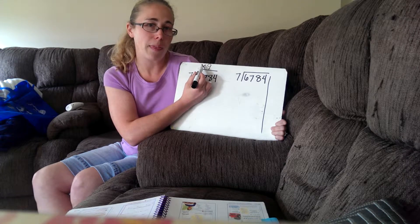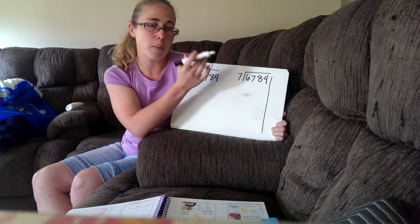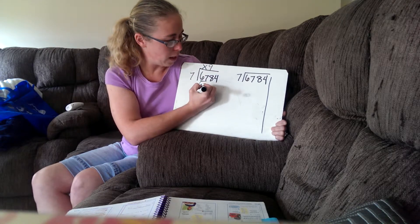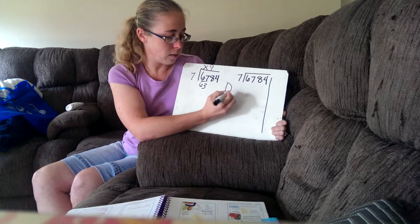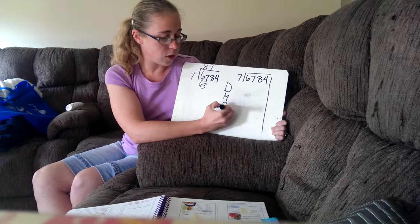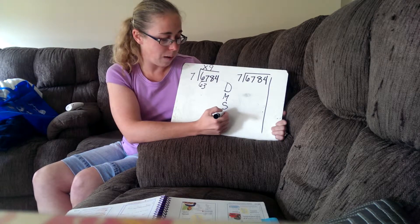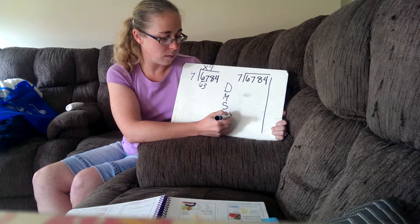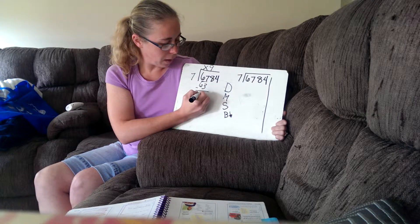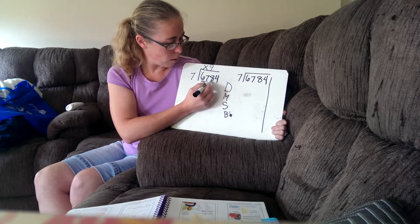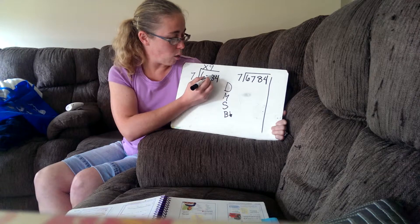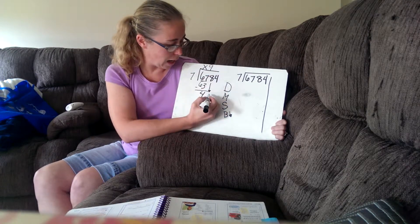That's why we put the x or the zero right there to hold that place so that we didn't try to put the digit there. Nine times seven equals 63. Now, remember — Dad, we just divided; Mom, now we just multiplied; Sister, it's time to subtract; and then after that, we'll do Brother — we'll bring it on down. So, 67 minus 63 will give me four. Now, it's time to bring down this eight.